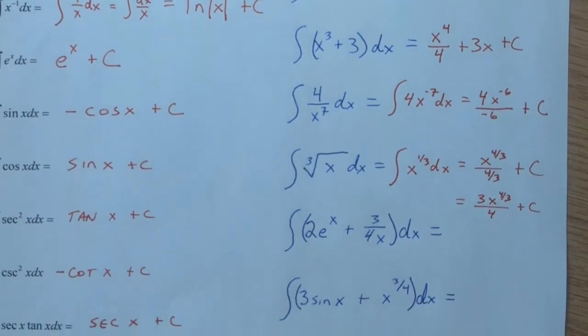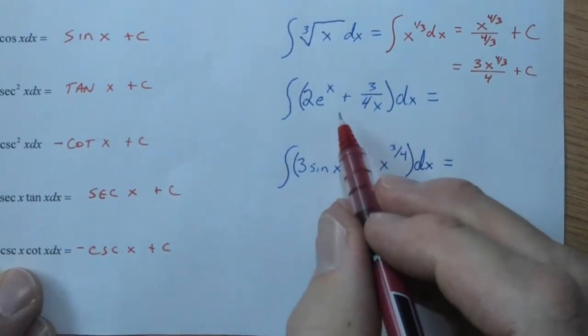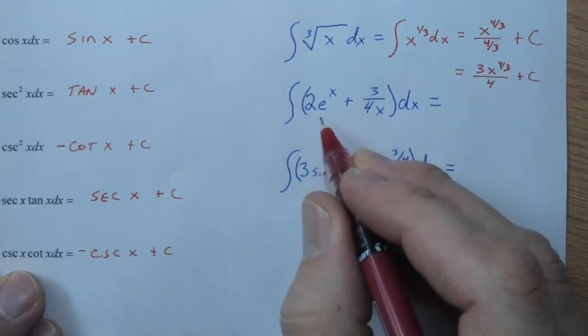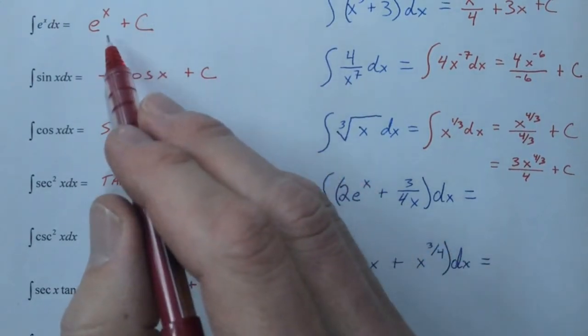All right, how do we do these next couple of problems? I'm actually going to, this one needs a little bit of work. We're going to rewrite this one for starters. We still have our 2 e to the x. Okay, and we know that e to the x will anti-derive to e to the x.